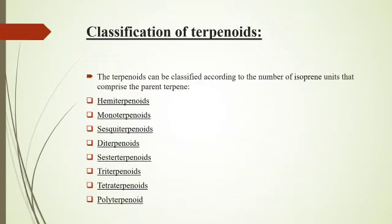Terpenoids can be classified according to the number of isoprene units that comprise the parent terpene: hemiterpenoids consist of one isoprene unit, monoterpenoids consist of two isoprene units, sesquiterpenoids consist of three isoprene units, diterpenoids consist of four isoprene units, triterpenoids consist of six isoprene units, and polyterpenoids consist of a long chain of isoprene units.